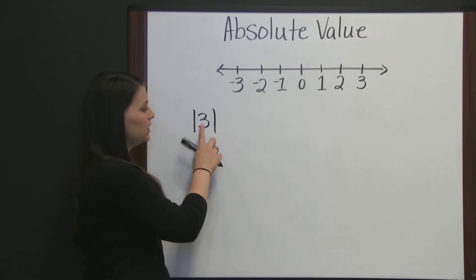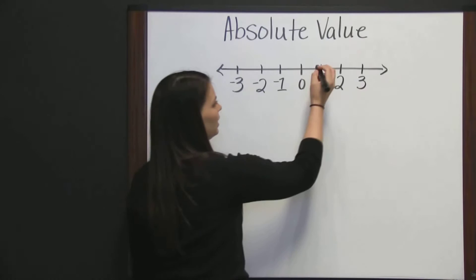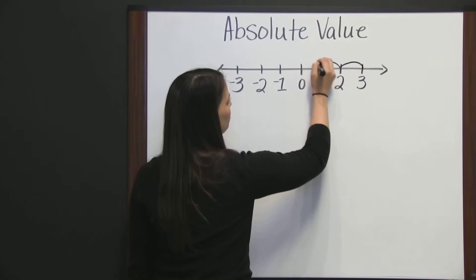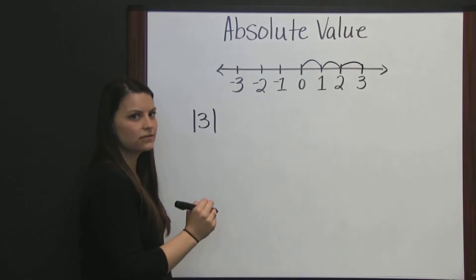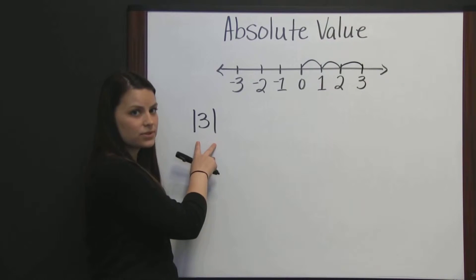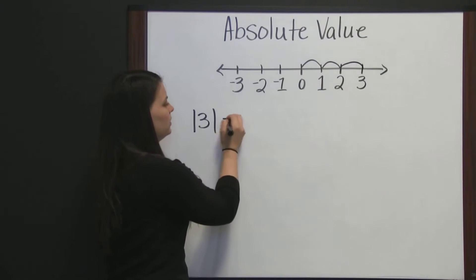how far is three from zero? Three is one, two, three places from zero. So, the absolute value of three is three.